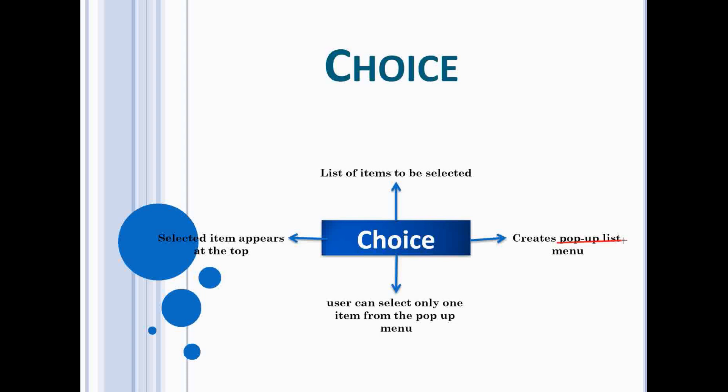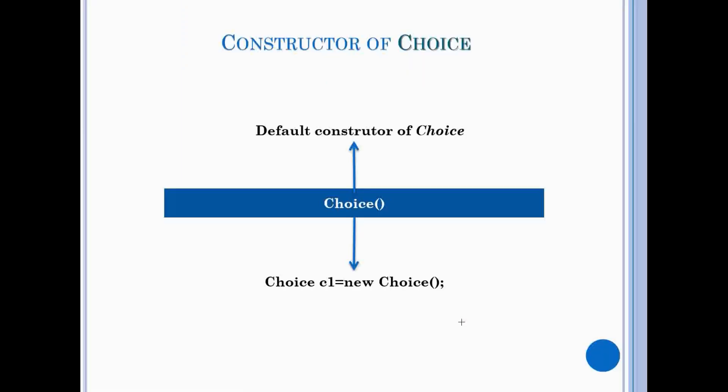Choice is a pop-up list menu which is a list of items to be selected and the selected item appears at the top of the list. User can select only one item from the pop-up menu. Now let's see the constructor of choice class which provides only one default constructor which can be used like this.